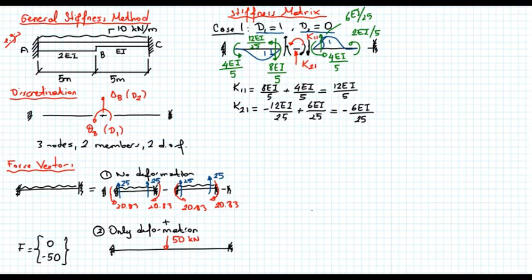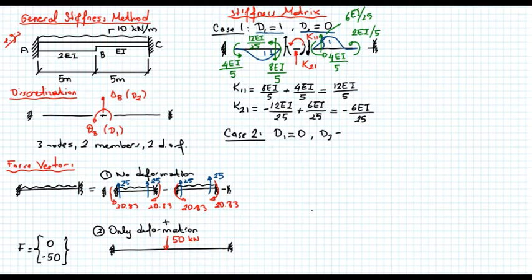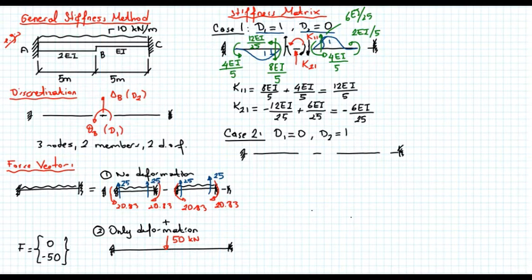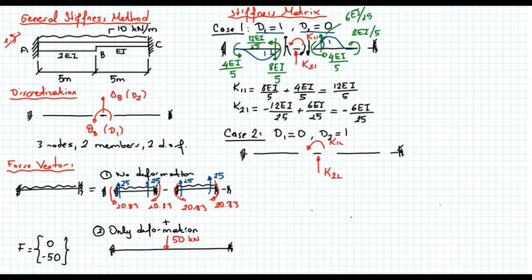The other column is calculated from case two: this time rotation D1 = 0 but translation D2 = 1. Let's draw the free body diagram. We apply K22 to create a unit translation and K12 to keep rotation equal to zero. The deformed shape shows a translation of one at node B, with both members displaced.